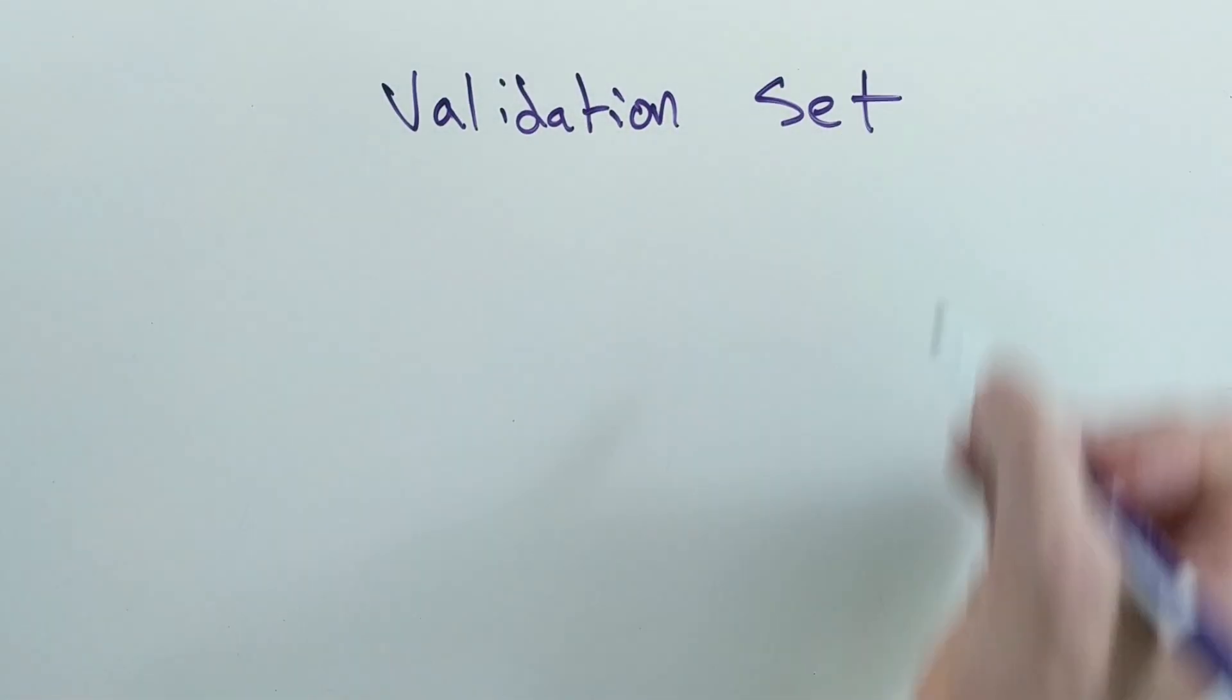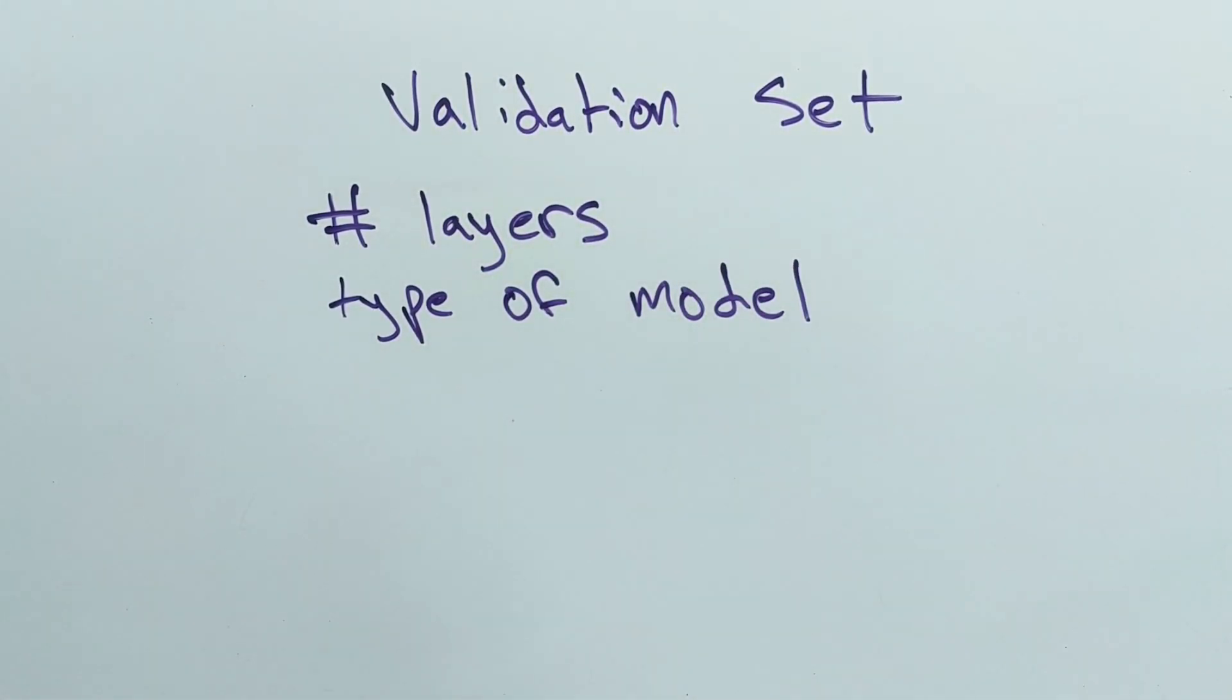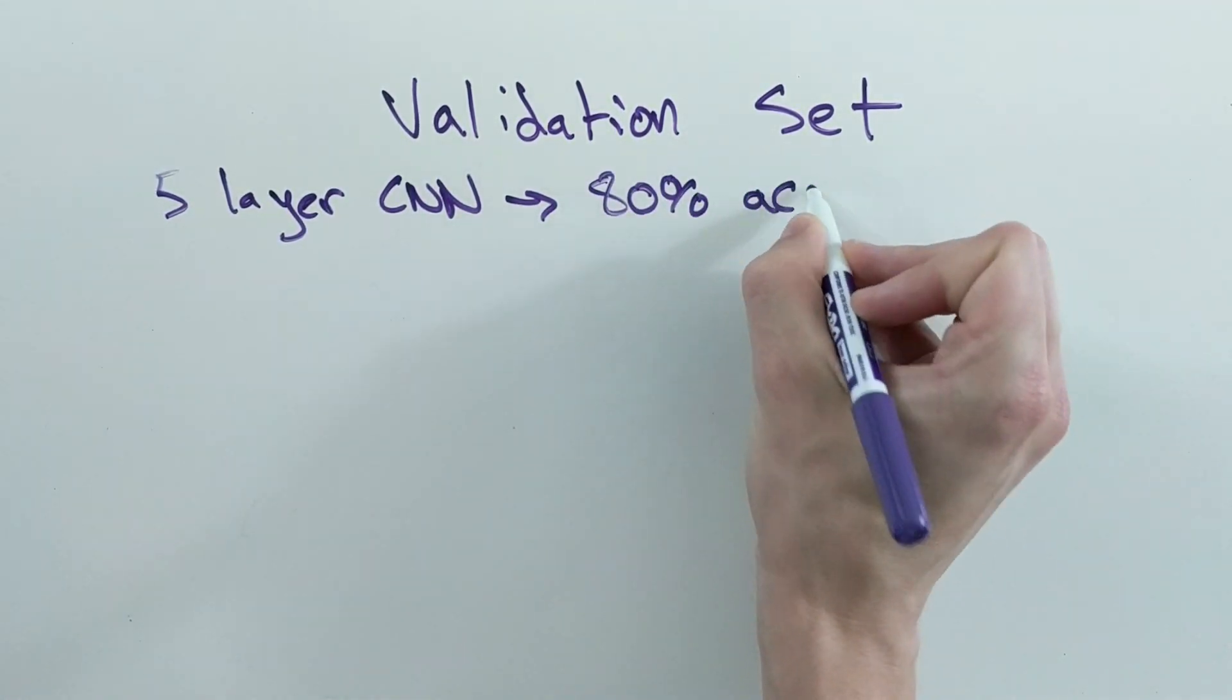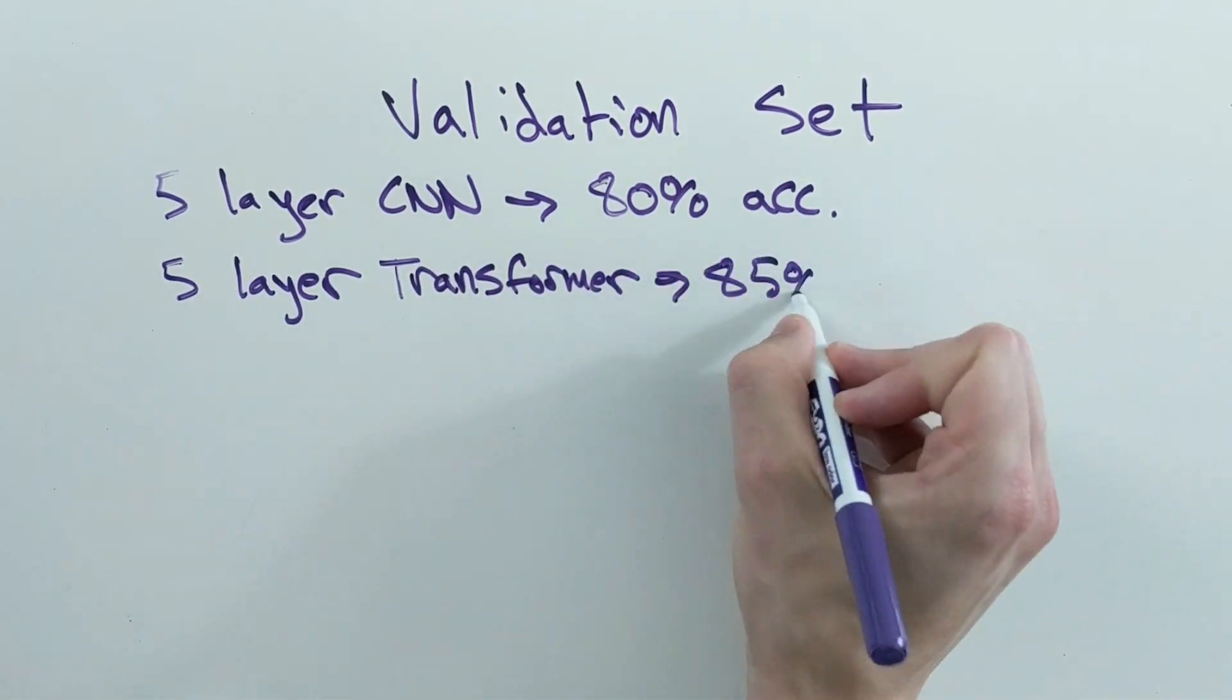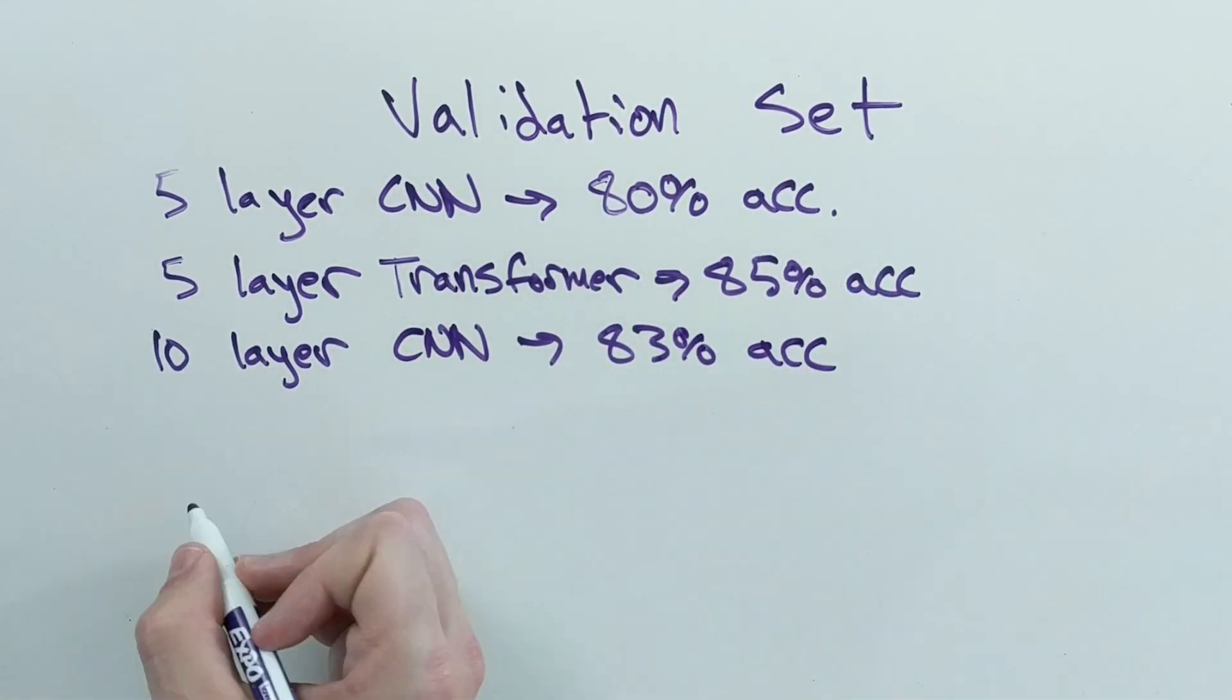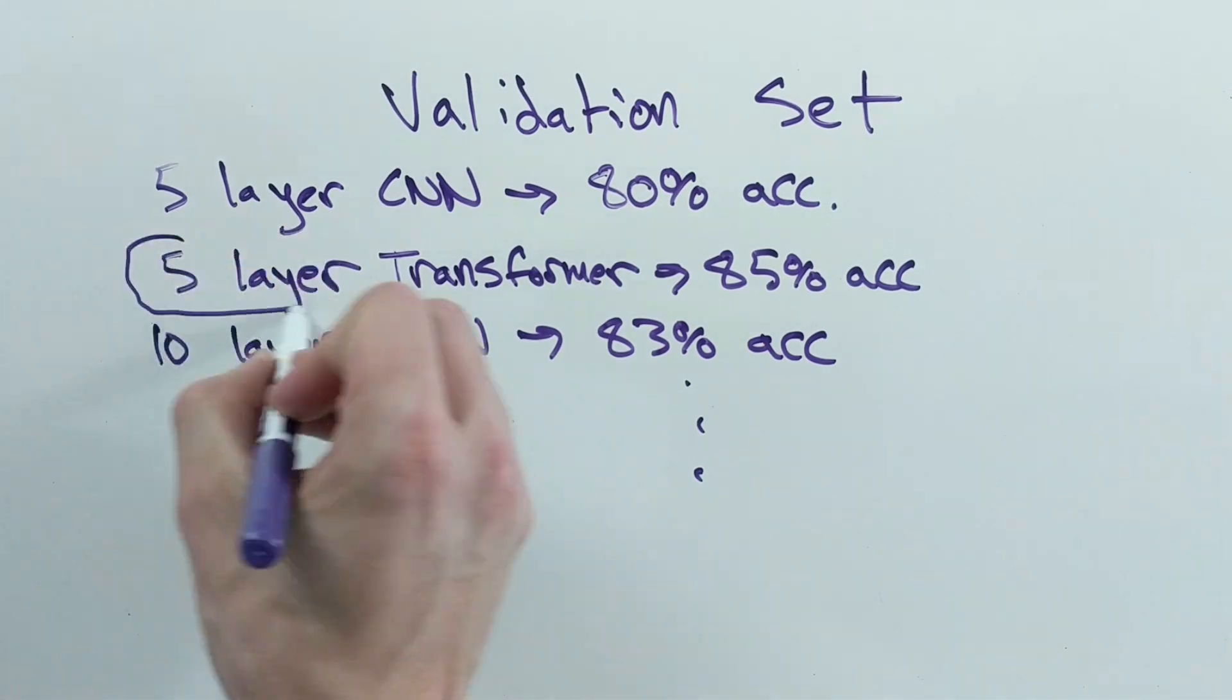The validation set is the set you use to pick the best parameters or the best model to use. For example, if you created 10 different models with different parameters, you would compare the results of all your different models and choose the one that works the best on the validation set.